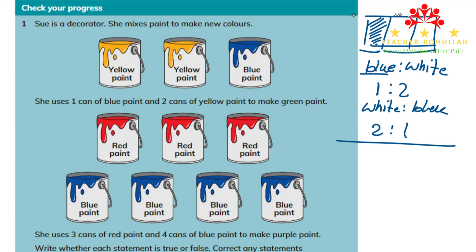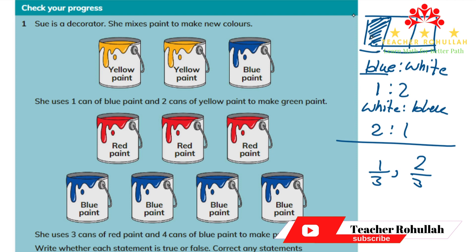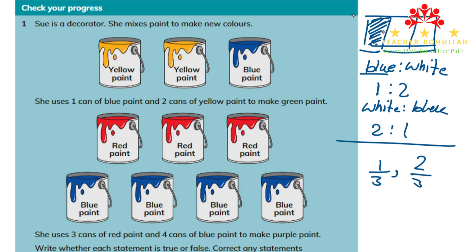But when we are talking about proportion, we are comparing part to the whole. For example, what proportion of the whole diagram is blue? It is one third. What proportion of the whole diagram is white? It is two thirds. So for this diagram, we can say for every one blue there are two whites, or one in every three parts is blue, and two in every three parts is white.